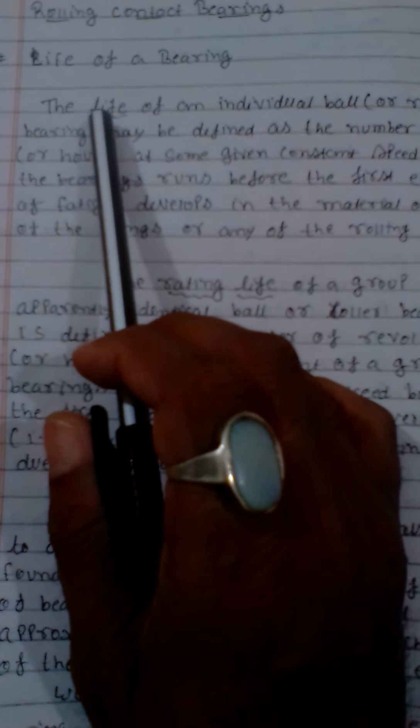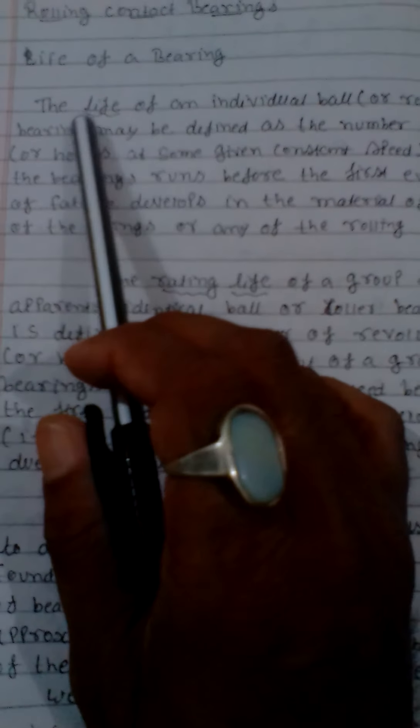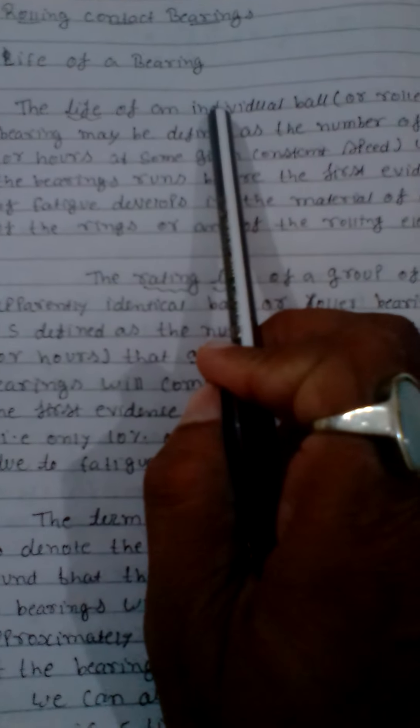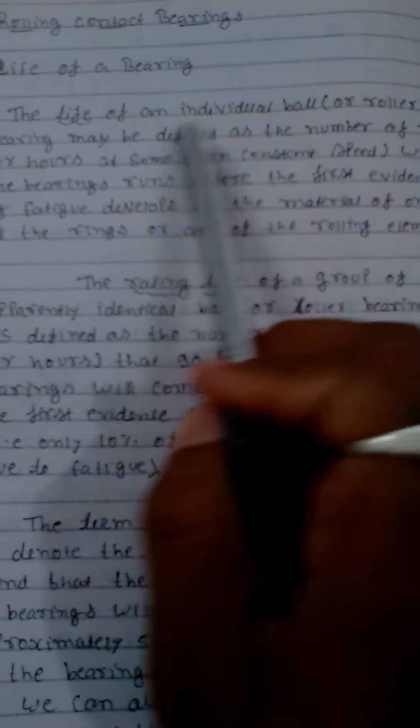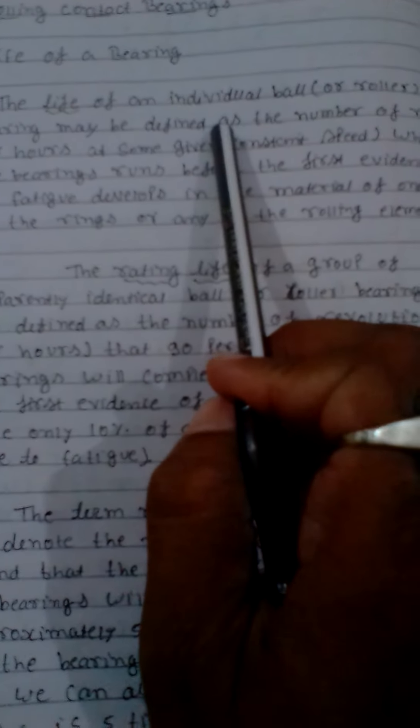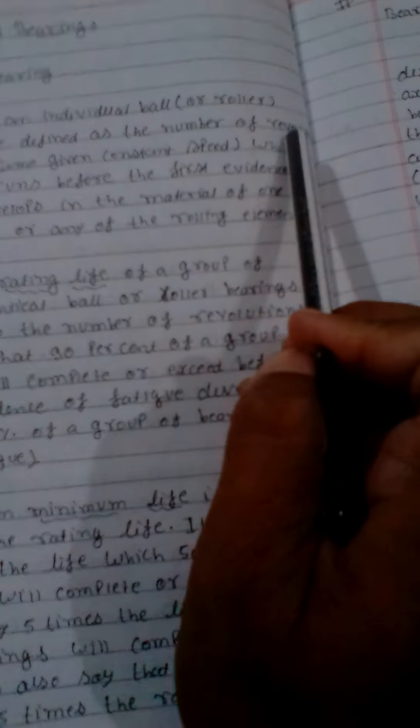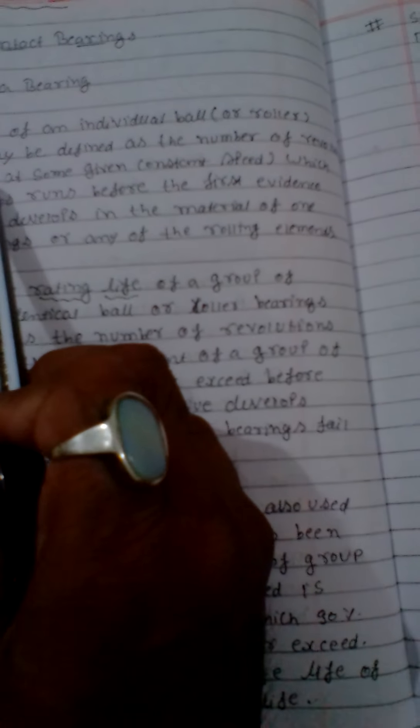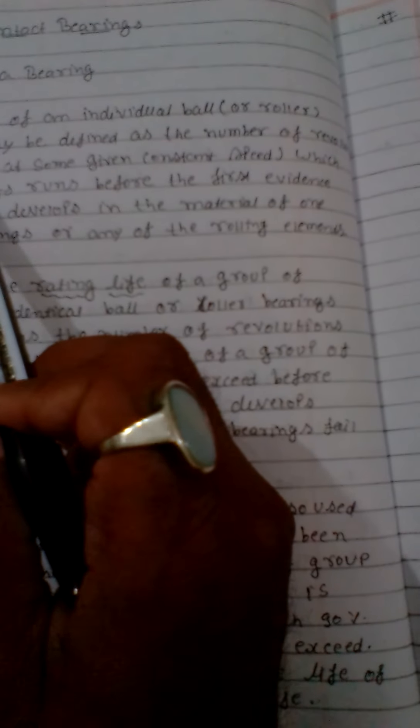Here the definition of the life of a bearing is: the life of an individual ball bearing may be defined as the number of revolutions or hours